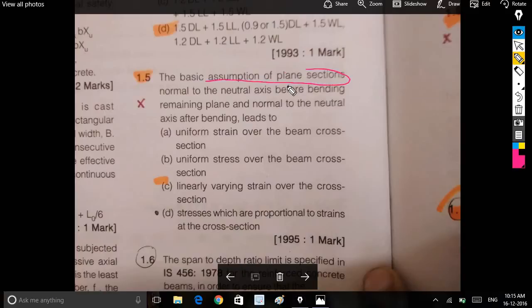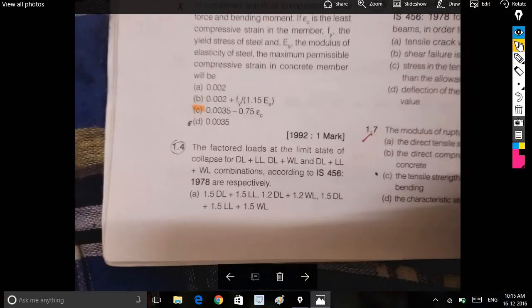The basic assumption: plane sections normal to neutral axis before bending remain plane and normal to neutral axis after bending, leading to linearly varying strain over the cross section.